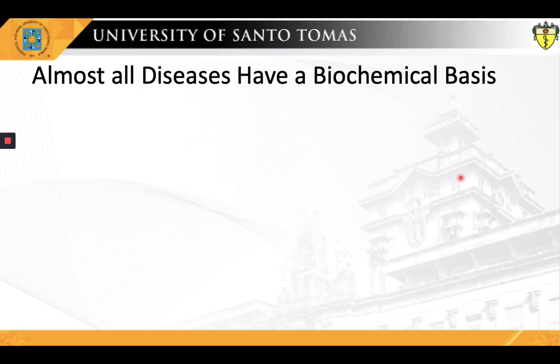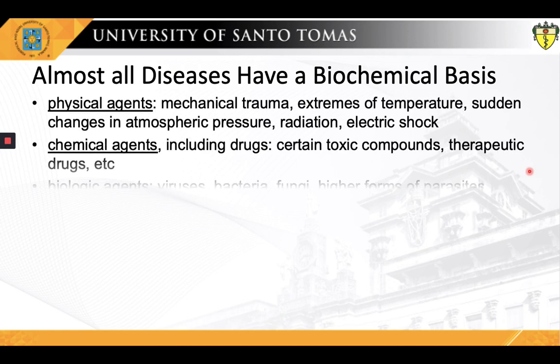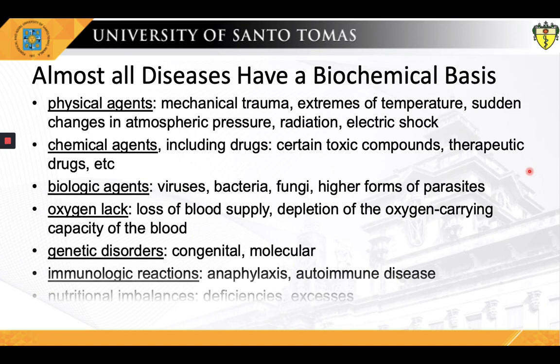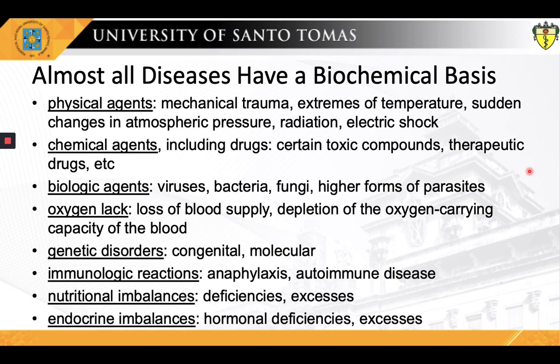We believe that most, if not all, diseases are just manifestations of abnormalities of molecules, chemical reactions, or biochemical processes. The major factors responsible for causing diseases in humans are listed in the table shown here. Each and every disease does have a molecular basis — all of them affect one or more critical chemical reactions or molecules in the body. It is almost impossible to think of any disease entity or pathology that does not involve any biochemical aberration.